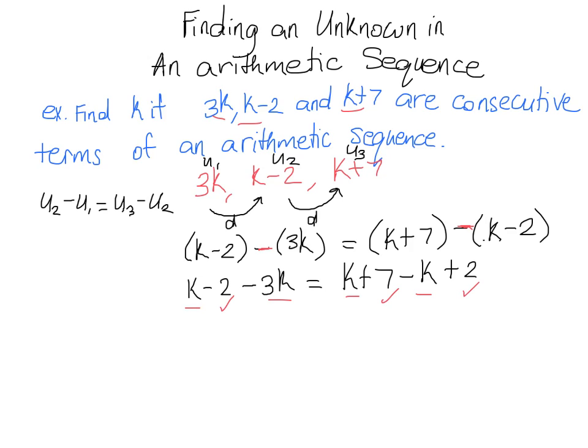So on the left side we have k minus 3k, which will give us negative 2k for our k's, minus 2 for our number.